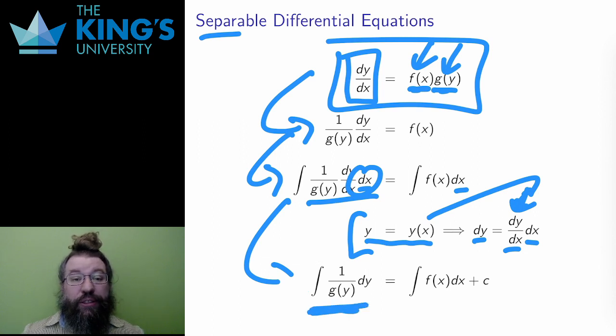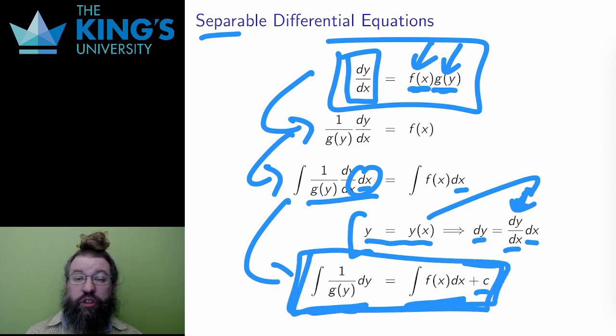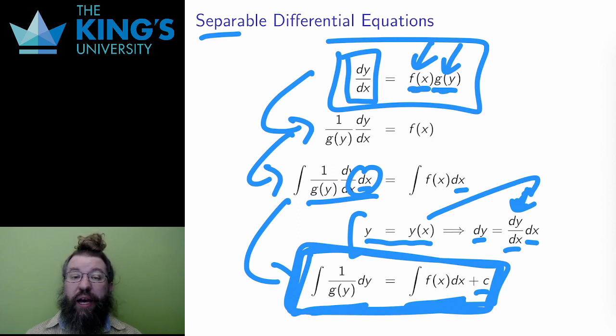And finally, I do these two integrals and add a constant of integration. I only need one constant. If there were two constants, I could move them to one side of the equation and combine them into one. This is the pattern for separable equations: the integral of 1/g(y) dy equals the integral of f(x) dx plus a constant. You can just use this pattern.